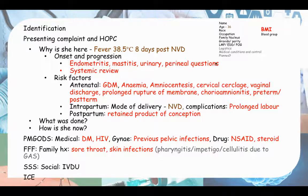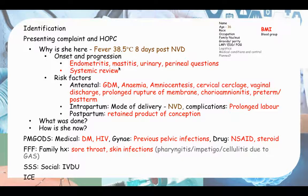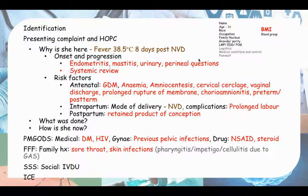Ask the relevant questions based on your differentials. For endometritis: any abdominal pain especially in the suprapubic region, and any vaginal discharge — is it purulent or foul-smelling? For mastitis: are they breastfeeding, is there any breast tenderness? Urinary symptoms — ask FUN-DH: frequency, urgency, nocturia, dysuria, hematuria. Perineal questions: ask the mode of delivery. If C-section, ask about the C-section scar. If normal vaginal delivery, were instruments used? Were there any tears or episiotomy? Is there pain at the scar?